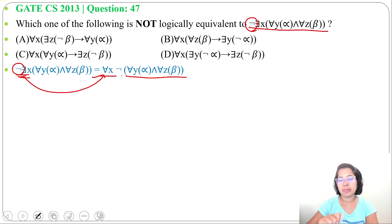Next we can apply De Morgan's law. If negation of P and Q, it will be equivalent to negation of P or negation of Q.